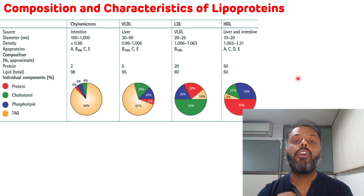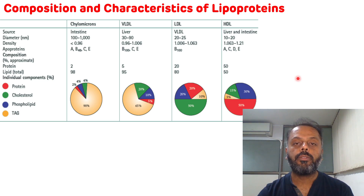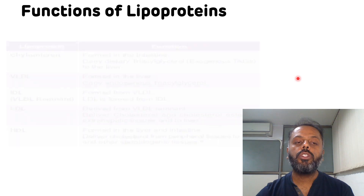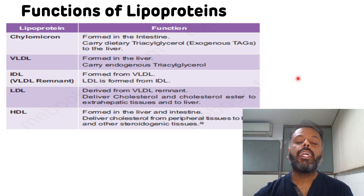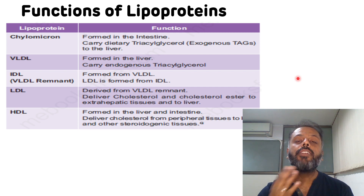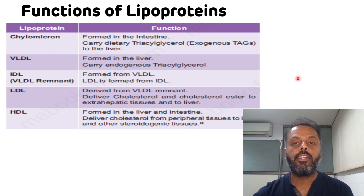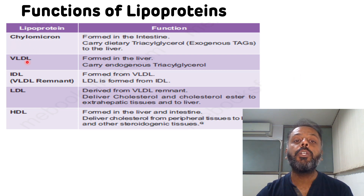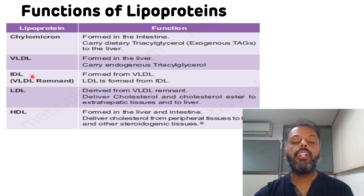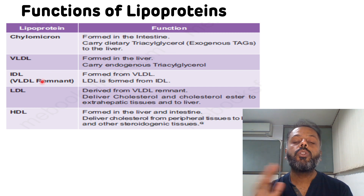Now the functions of each lipoprotein. Chylomicron is formed in the intestine and carries dietary triacylglycerol to the liver — that is exogenous triacylglycerol. VLDL carries endogenous triacylglycerol.